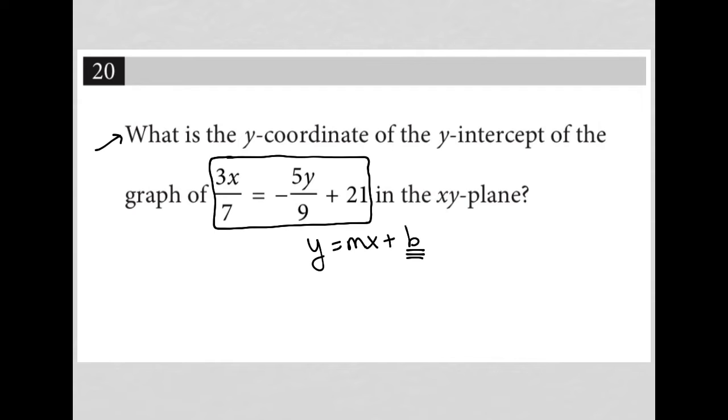But I can probably also just realize that the y-intercept is where x is equal to 0. So I can just find it directly. Let's just do it that way first. I think that probably will get me there a bit faster than converting this into slope-intercept form.